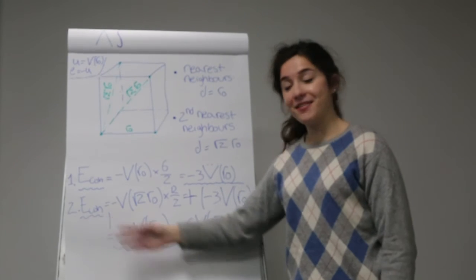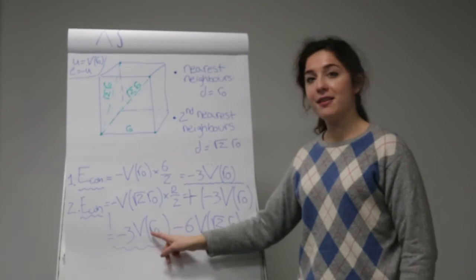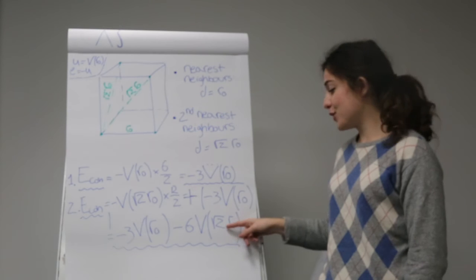So in this case, the cohesive energy of the solid would be minus 3V of R0, minus 6V of R2 of R0.